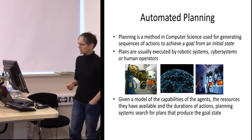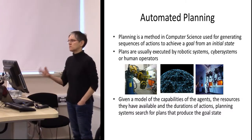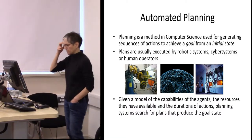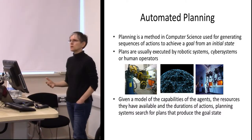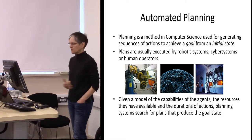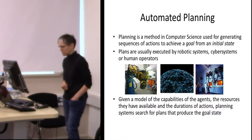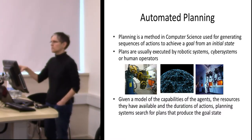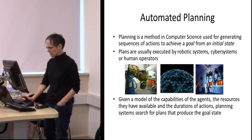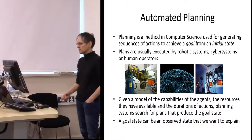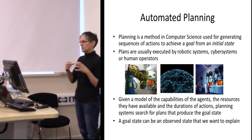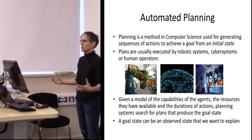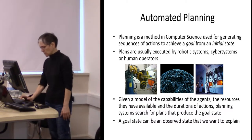To make a planner find these plans, we provide a model of the capabilities of the agent that will execute the plan. This contains what actions the agent can perform, the resources available, the durations of actions, and their causal importance. The idea is that the goal state could be an observed state we want to explain, and the current state could be some hypothesized past state, with planning constructing a causal explanation for how we went from the initial state to the state we want to explain.